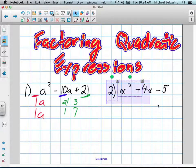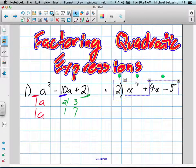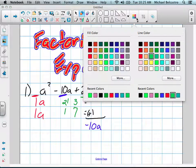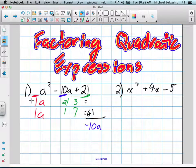We know that these products we're going to need to add up to our middle term, which is our b, in this case negative 10a. That negative is going to come into play for us. It's going to be quite important when we go to actually set this all up.